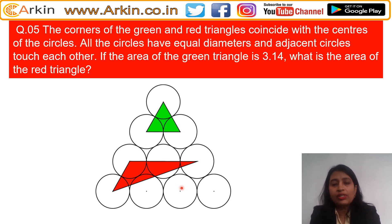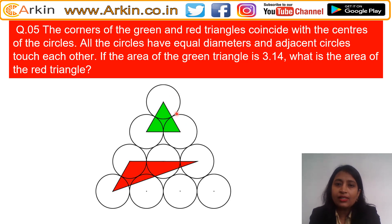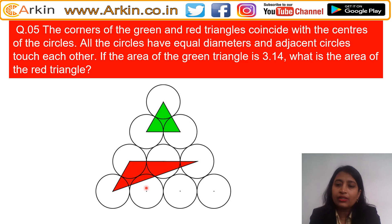One thing you should always remember in this type of area question: if they ask about area, there has to be some relation between these two areas, and that relation we have to find out. They have given this area and asked about that area — how will we find out unless there is some relation? That is clear logic. So we have to find out what is the relation between these two triangles, and once we go in that direction, we will find the answer.